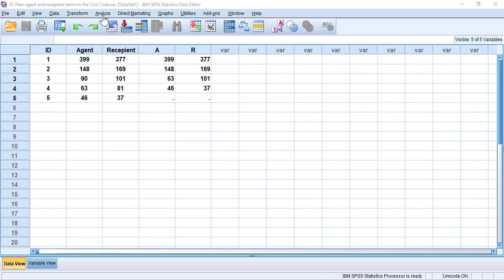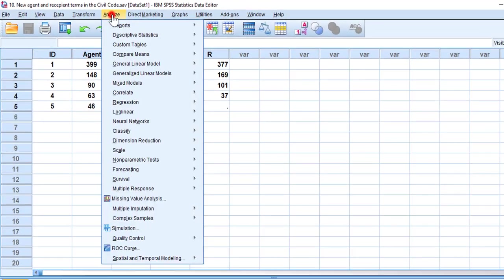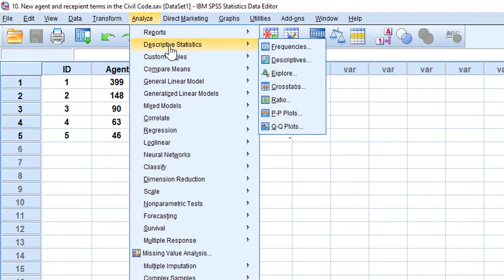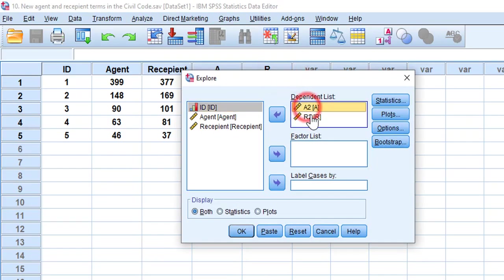I'm going to go to Analyze, Descriptive Statistics, and then Explore. So I'm just going to put this back. I want to test these two variables whether or not they are normally distributed. I'm going to move them to this list.